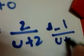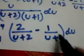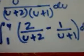Substituting A = 2 and B = -1, we get 2/(u+2) minus 1/(u+1). So instead of the original fraction, we write this in the integral. Put the bracket to indicate we are integrating both terms. Now we can integrate each term separately, which we could not do before when the denominator was in its combined form.